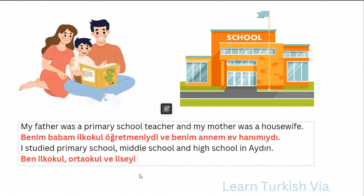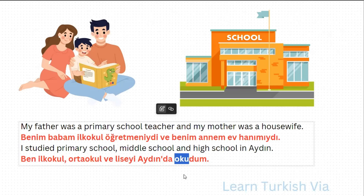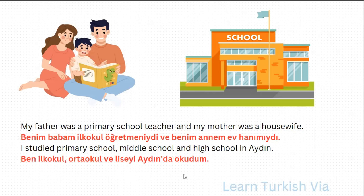In Aydın — Aydın'da. Study — oku. Studied — okudu. I studied — okudum. Oku means read normally, but when the context is a school, it means to study at a school. So, I studied primary school, middle school, and high school in Aydın: Ben ilkokul, ortaokul ve liseyi Aydın'da okudum.